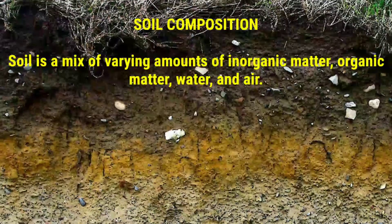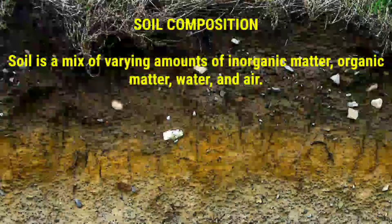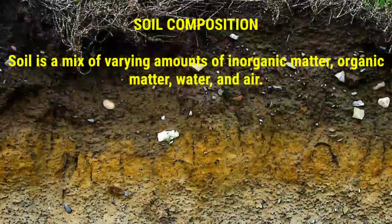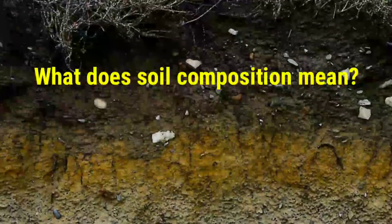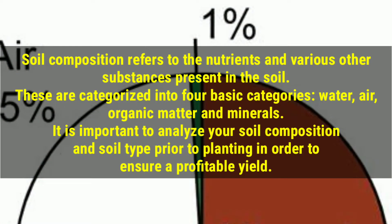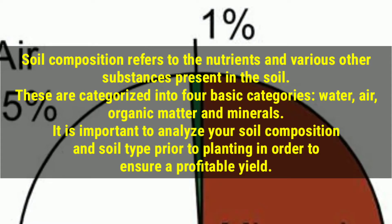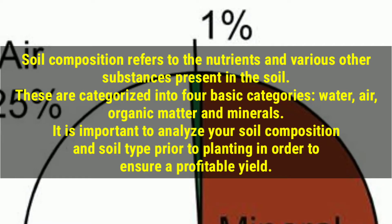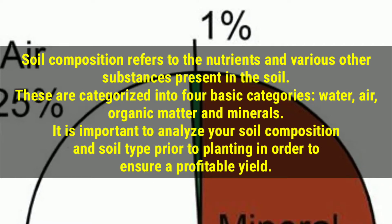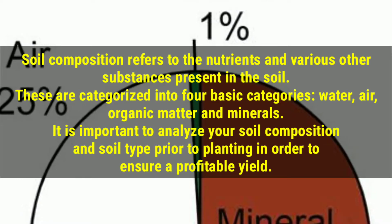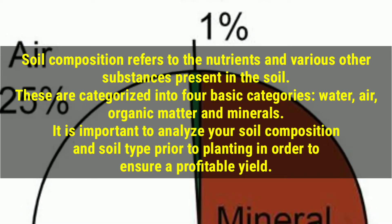Chemical composition of soil: soil is a mix of varying amounts of inorganic matter, organic matter, water, and air. Soil composition refers to the nutrients and various other substances present in the soil, categorized into four basic categories: water, organic matter, and minerals.